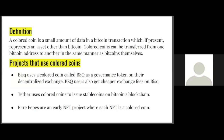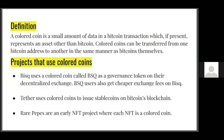A colored coin is a small amount of data in a Bitcoin transaction. Every Bitcoin is also a small piece of text, and so is every stablecoin and every NFT — anything that goes on a blockchain is text. Colored coins occur inside Bitcoin transactions and represent an asset other than Bitcoin. Stablecoins represent a physical dollar; NFTs typically represent a piece of art. Colored coins can be transferred from one Bitcoin address to another in the same manner as bitcoins themselves.